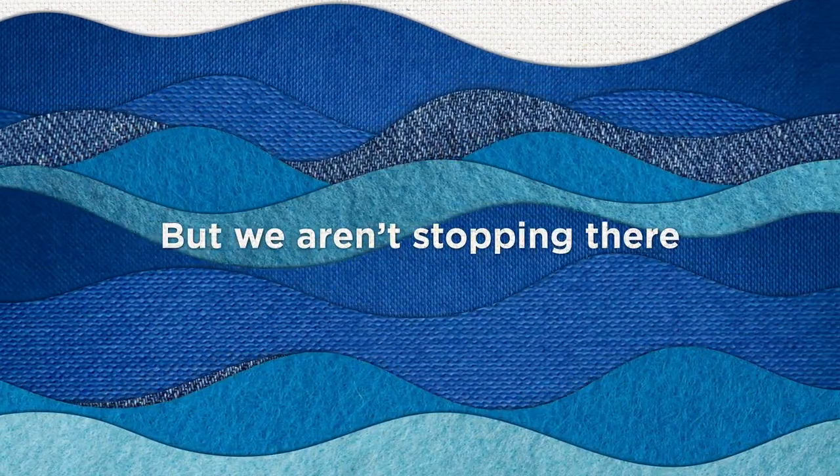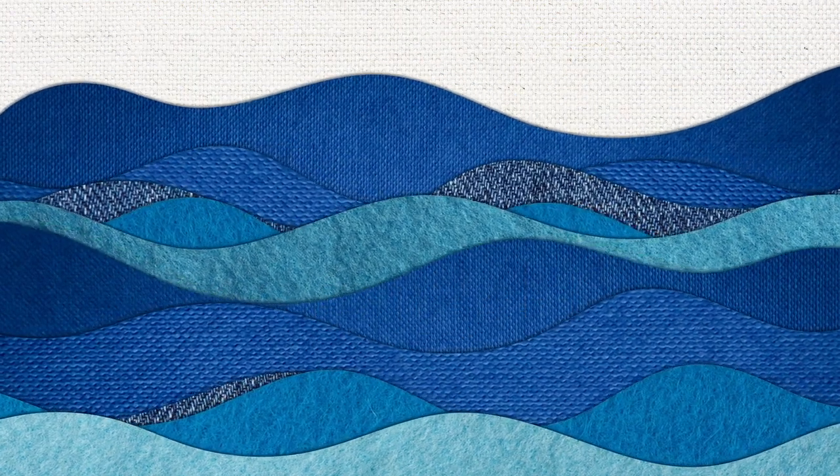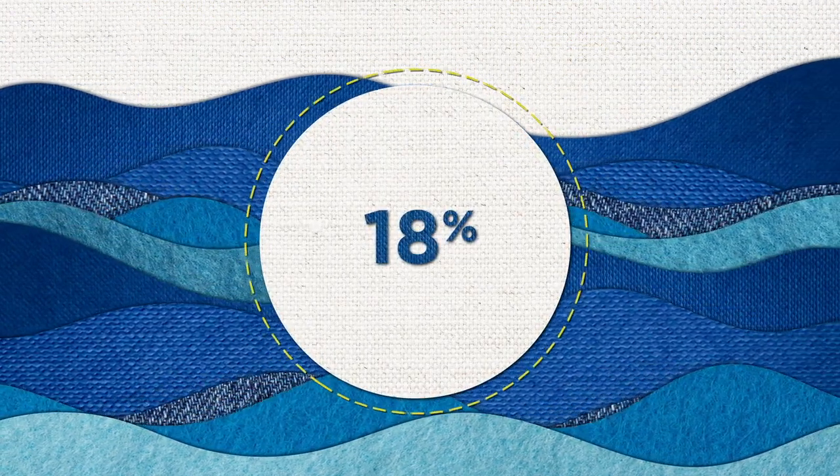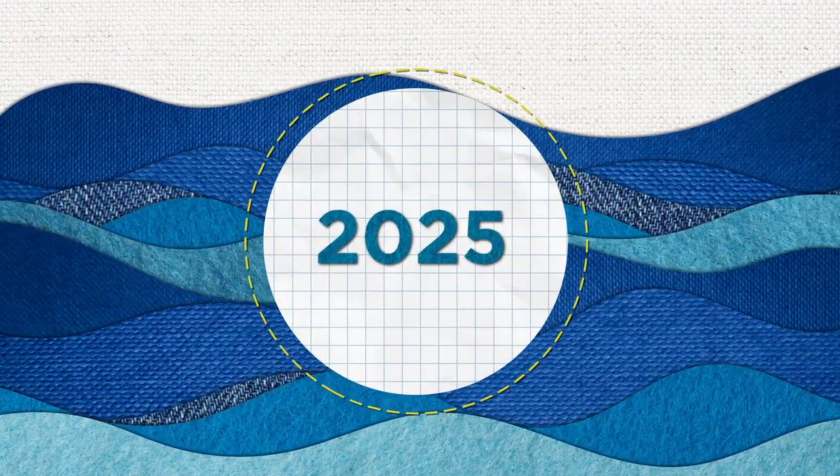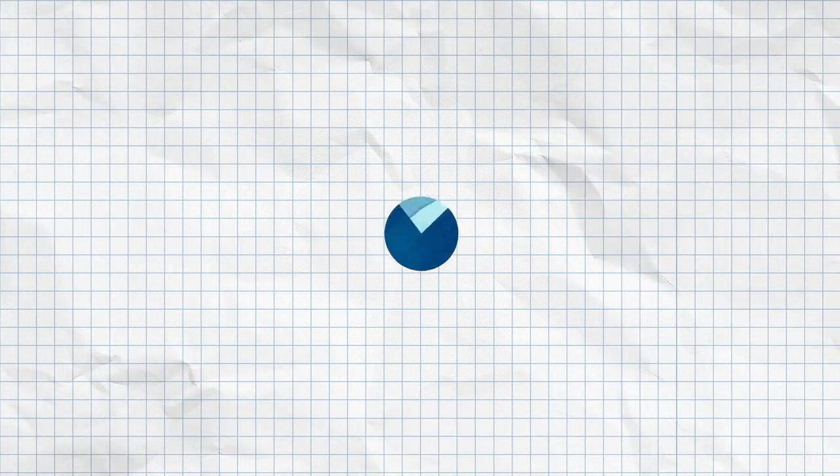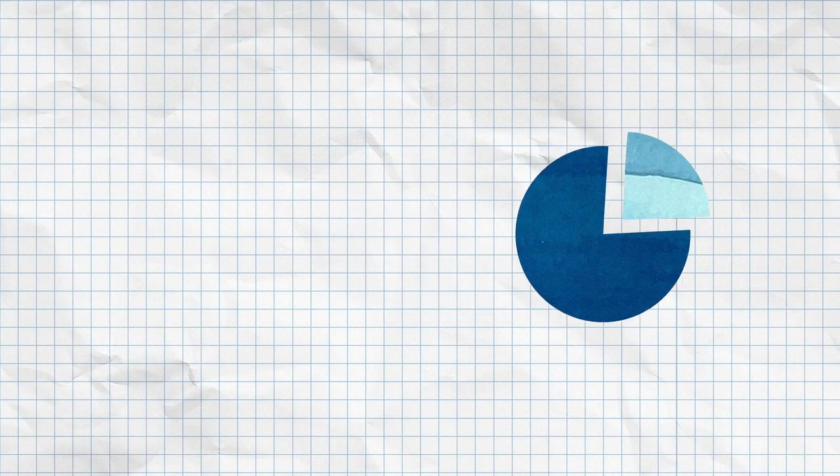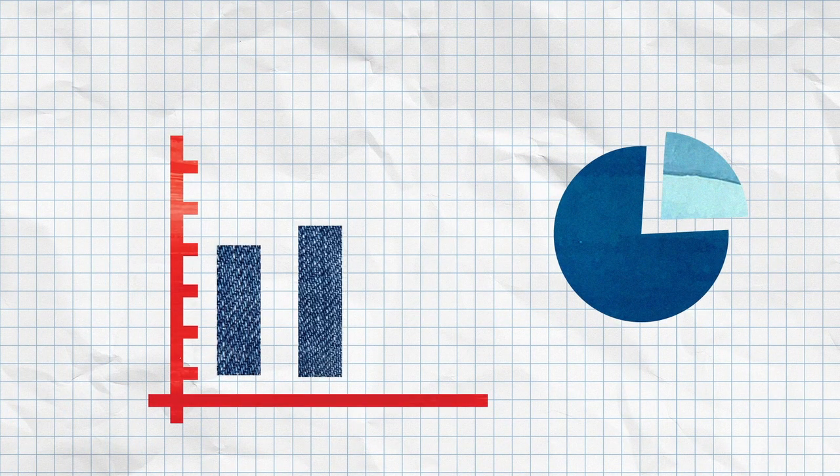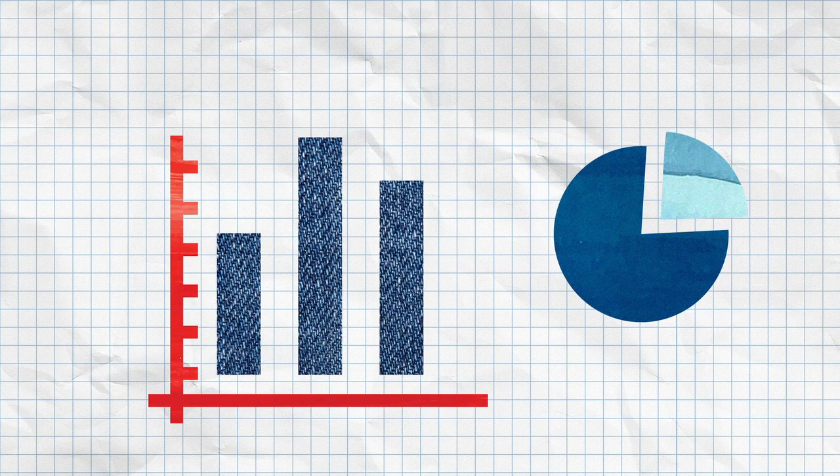But we aren't stopping there. We're committed to decreasing water use by an additional 18% by 2025. And the U.S. Cotton Trust Protocol provides grower members with water footprint data for their own farms that will help improve performance.